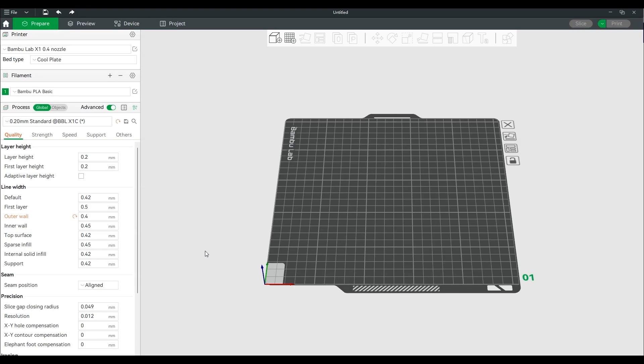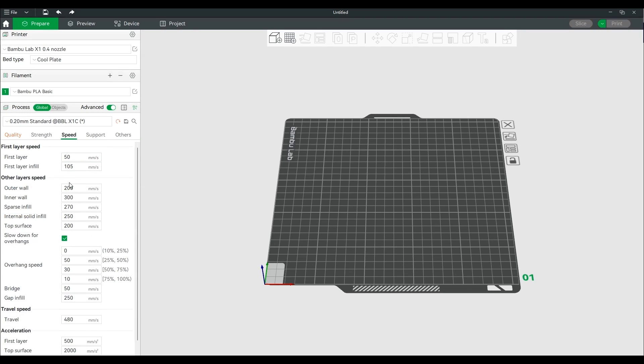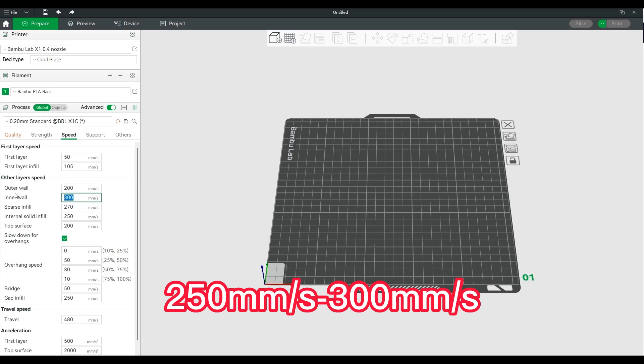The Bamboo Lab X1's default is 300 millimeters per second. After our test, you can see that 300 millimeters per second is very close to the limit. After testing the Bamboo, the real print speed should be around 250 millimeters per second to 300 millimeters per second.